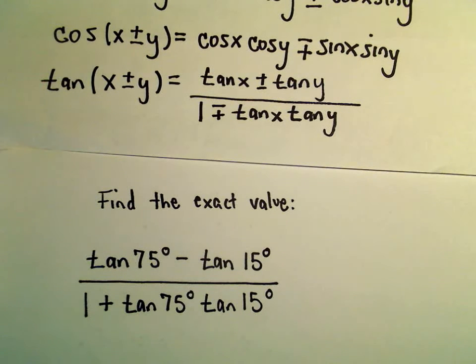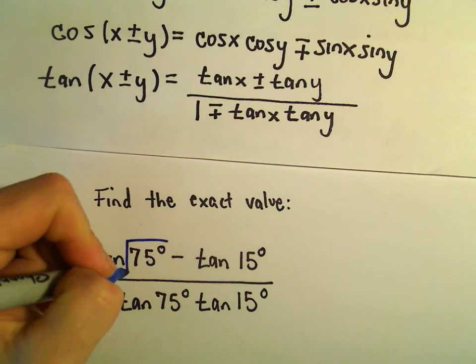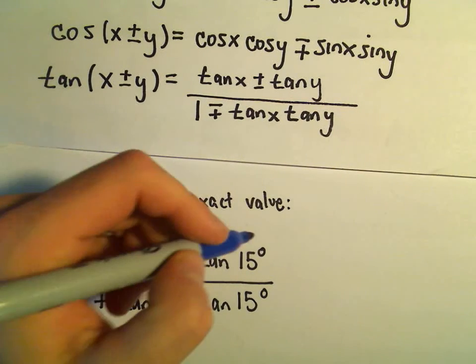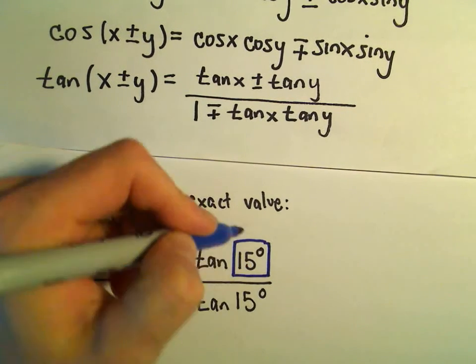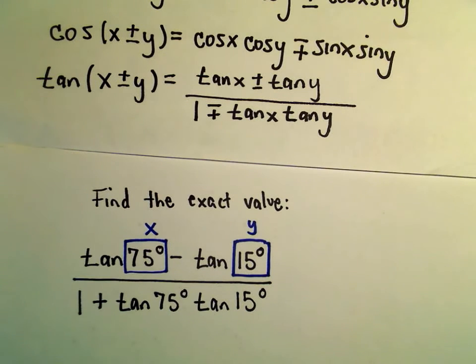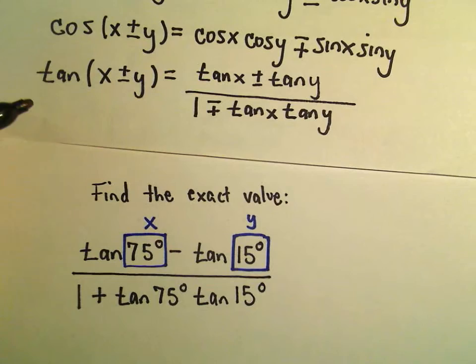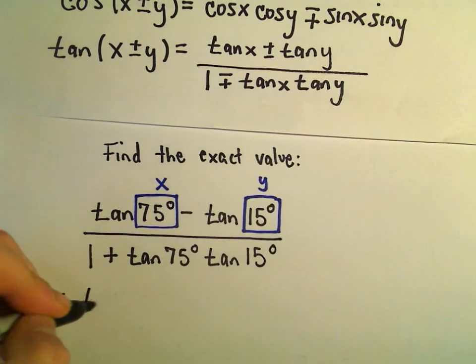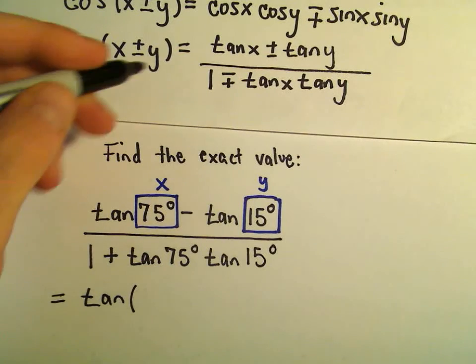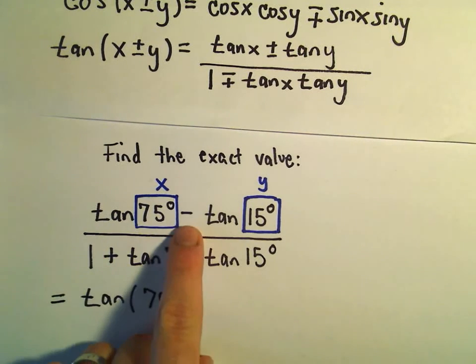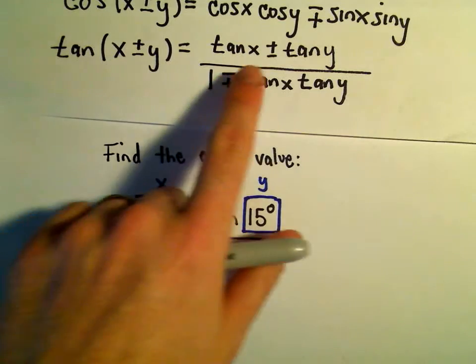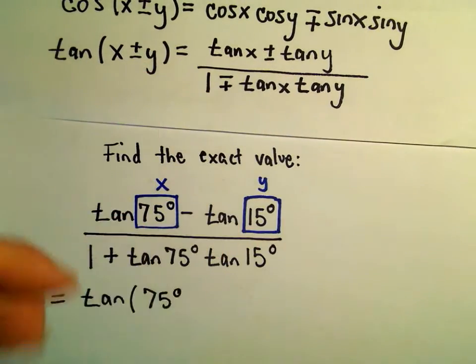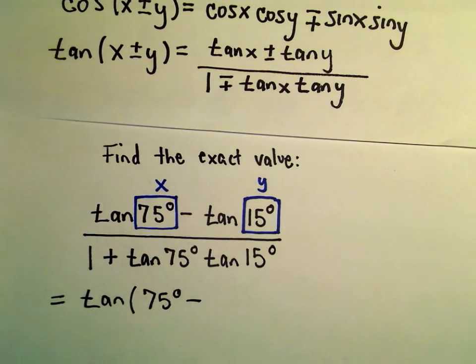And in this case, our x is just going to be the 75 degrees. And the y is just going to be our 15 degrees here. So it says simply we'll get tangent of the first one, 75 degrees. Again, if there's a negative in the numerator, we preserve that sign in between. So we're going to keep a negative in between here.